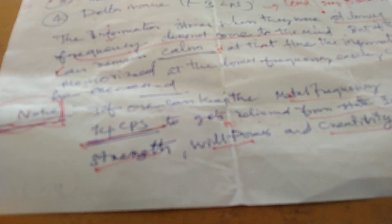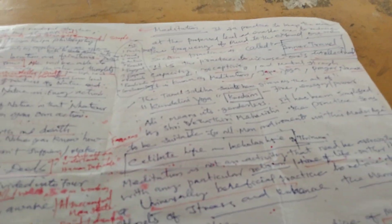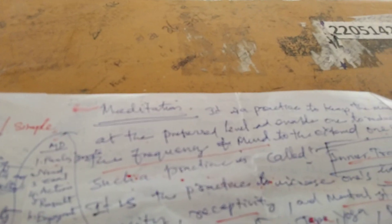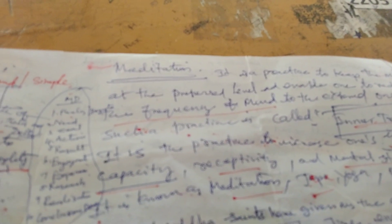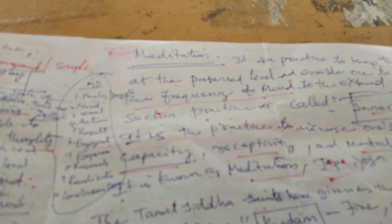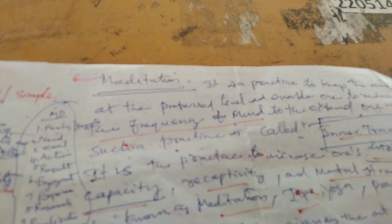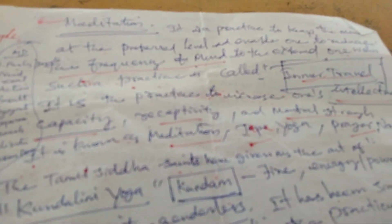That means theta state. Alpha state is from 8 to 13 point. Below 13 point, we cannot get intellectual strength, will power, or creativity. All these things we can come across only in beta state. Meditation is practiced to keep the mind at the preferred level. Enables one to reduce the frequency of mind to extend one's wishes. Such practice is called inner travel. Meditation is otherwise known as inner travel.